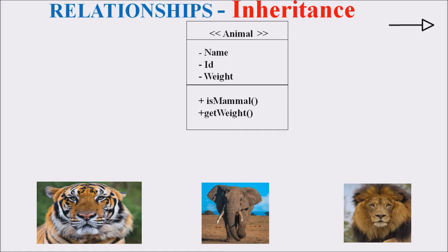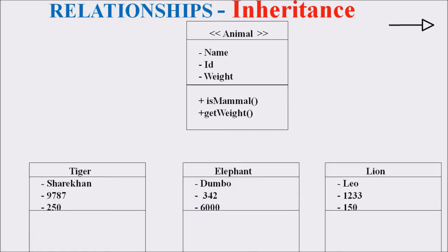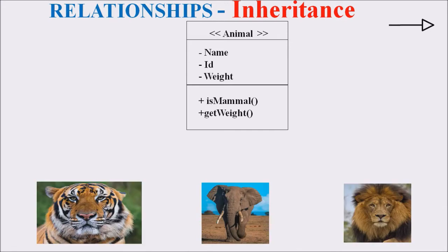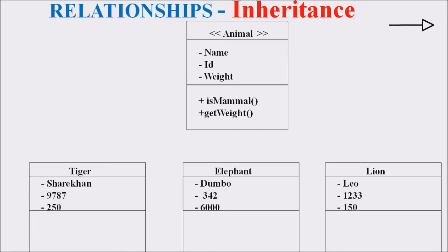Here we can see three different objects. The first one is a Tiger, the second one is an Elephant, and the third one is a Lion. Each of these animals belongs to the superclass Animal. The Tiger class has the name Shere Khan, ID value 9787, and a weight of 250. This Tiger class is inherited from Animal.